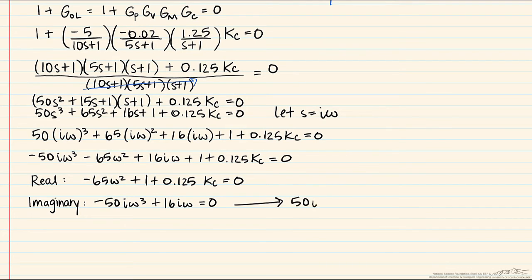We'll have 50i omega cubed equals 16i omega. One of the omegas cancels as well as the i's, so that leaves us with omega squared equals 16 over 50, or omega equals the square root of 16 over 50, which is approximately 0.566.